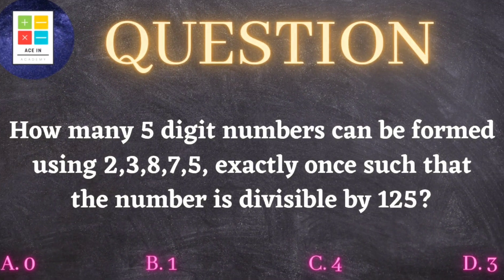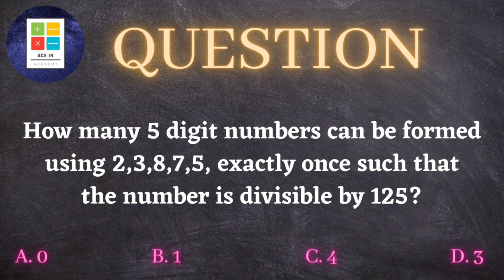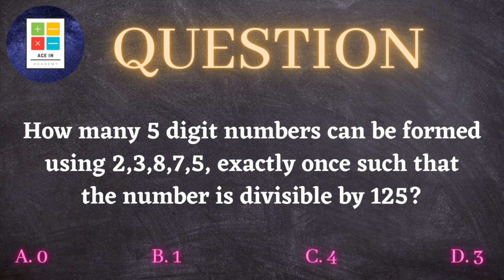Now the question is as follows: How many five-digit numbers can be formed using 2, 3, 8, 7, 5 exactly once such that the number is divisible by 125? We are provided with four options: 0, 1, 4, and 3.